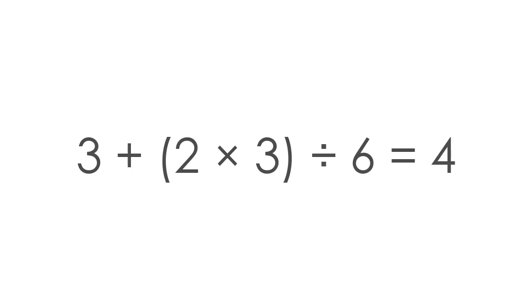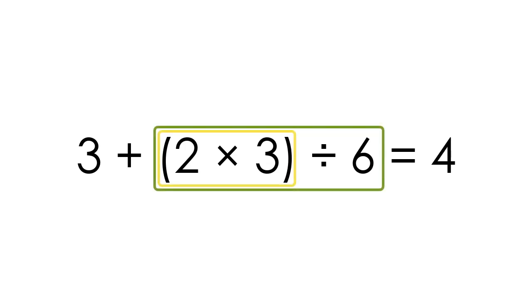For example, 3 plus 2 times 3 divided by 6 results in a value of 4, since the multiplication and division operations are computed prior to the addition operation. Parentheses may be used to assist in the order of computation.